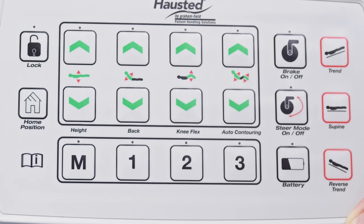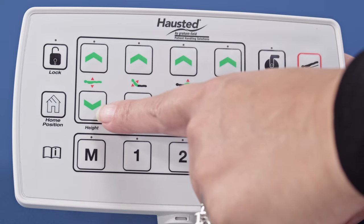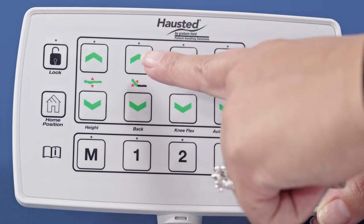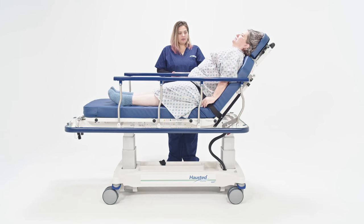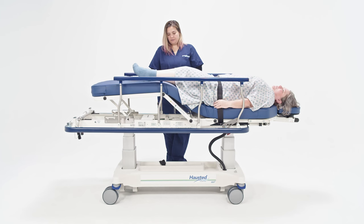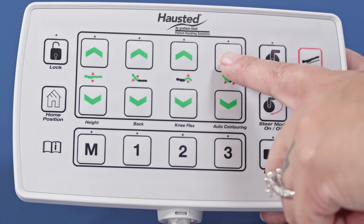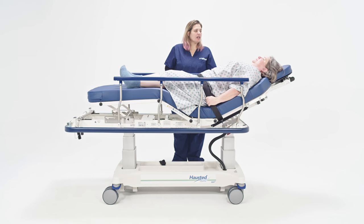The 5E82 pendant has special buttons for height, back, knee flex, and auto-contouring that can be held down until the desired position is achieved.